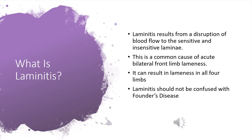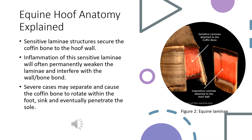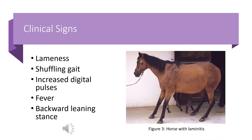First, it is best to understand the anatomy of an equine's hoof. Horses have sensitive laminae structures that secure the coffin bone into the hoof wall. Inflammation of the sensitive laminae will often permanently weaken that laminae and interfere with the wall-and-bone bond. Severe cases may cause the coffin bone to rotate within the foot, sink, and eventually penetrate through the sole. Pictured here is a diagram showing where the sensitive laminae attaches to the coffin bone and the insensitive laminae to the hoof wall.